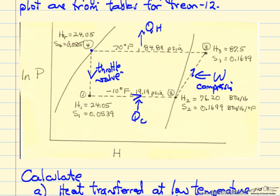Looking at the data given, the entropy of 3 is the same as the entropy of 2. This is reversible compression, and since it is adiabatic this means that delta S is zero for the compression.